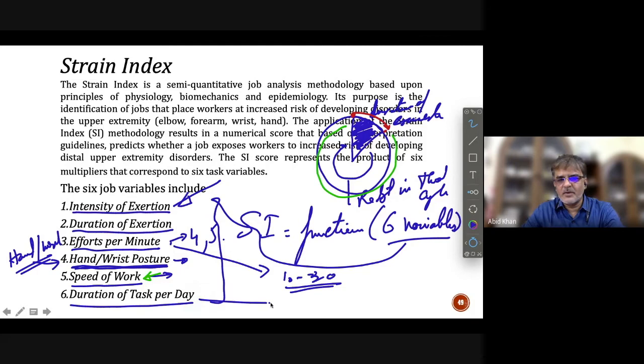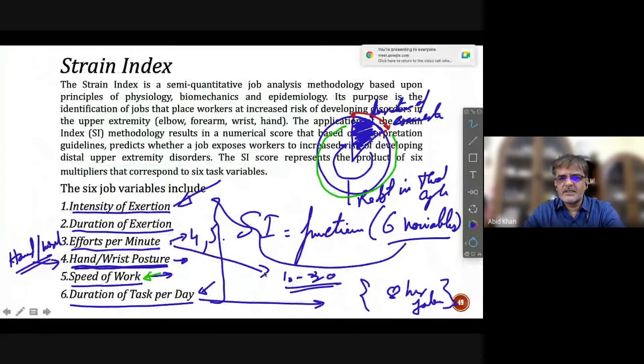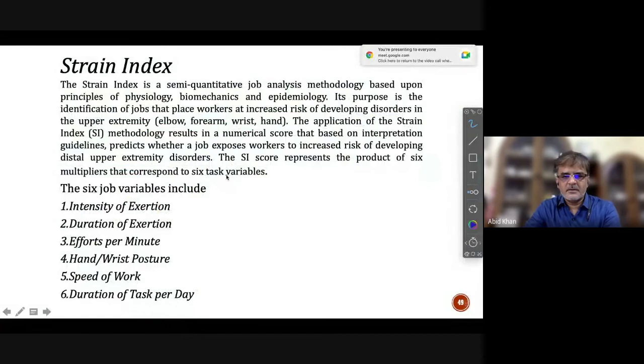Then we have duration of task per day. This is an overall consideration throughout what we consider an 8 hours job. So in 8 hours job, how many hours you are involved in work and how many hours you are taking rest. So this rest is nothing but the rest of the cycle. But it is not actually a rest. You get some rest periods like lunch break, micro breaks for teas, etc. So that will be subtracted from this 8 hours job and then we consider it duration of the task per day. So these were 6 basic factors on which we can obtain what is called strain index.